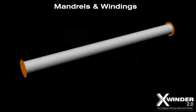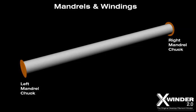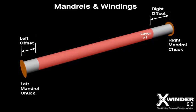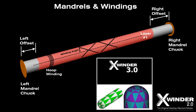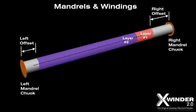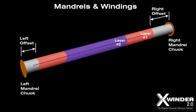The mandrel is supported on either end by the left and right mandrel chucks, and each layer can be offset any distance from the chuck ends. The layers are defined by a winding angle of the filament relative to the central axis, and winding angles can range from 90 degrees (hoop winding) down to about 25 degrees on the two-axis version. Zero degree winding angles and polar or spherical end caps will be possible with the X-Winder three-axis version, an upgrade offered later this year. Filaments can be offset from the ends to produce variable wall thickness, or layers can be staggered to produce stepwise increments in wall thickness.